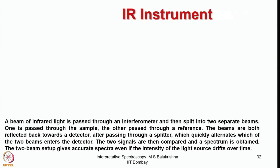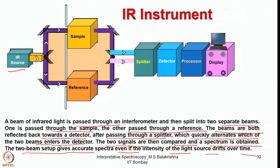A typical IR instrument works as follows: a beam of infrared light is passed through the interferometer and split into two separate beams — one passed through the sample and the other through a reference. The beams are reflected back towards the detector after passing through a splitter which quickly alternates which of the two beams enters the detector. The two signals are compared and a spectrum is obtained. The two-beam setup gives accurate spectra even if the intensity of the light source drifts over time.